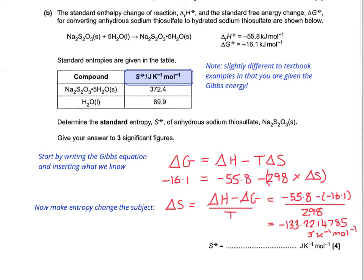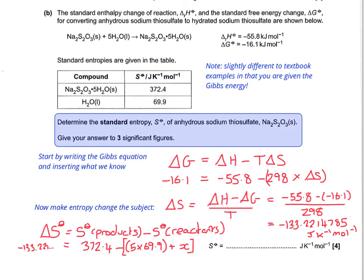We can work out the missing entropy of the substance we're asked to calculate. So we want the standard entropy of anhydrous sodium thiosulfate. So if we just lay out the calculation you need to work out the entropy of an individual species, we've got the products. There's only one product, and that's your hydrated sodium thiosulfate, which is 372.4. And from that, you subtract five waters plus your unknown entropy, which is the anhydrous one that's trying to get you to work out. Remembering, of course, that delta S has been just calculated as minus 133.2214785. So solving for X and making sure it's to three significant figures, we end up getting plus 156.